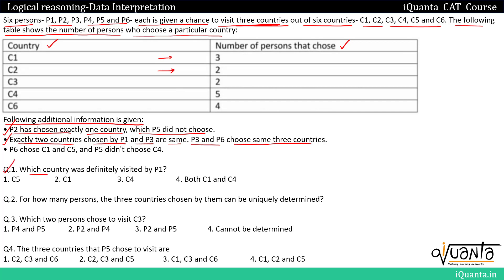The first question asks which country was definitely visited by P1. We can only answer this when we know which country is being visited by which person. The second question asks for how many persons the three countries chosen by them can be uniquely determined. The third question asks which two persons chose to visit C3. For all these we need the same information, so we will form a table.